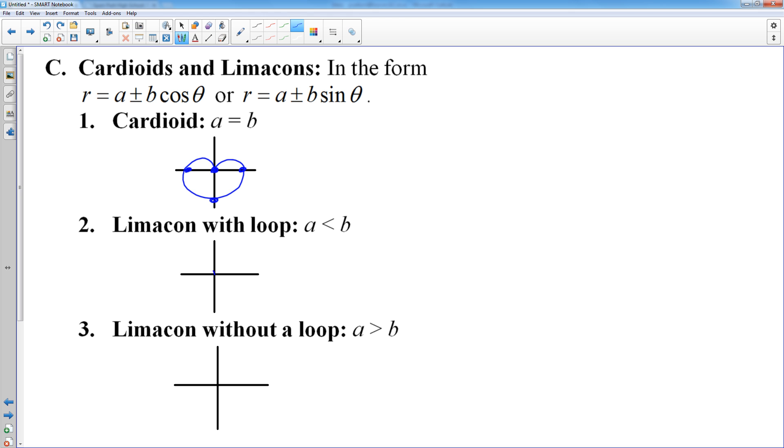A limaçon with a loop starts off looking like a cardioid. But then it comes through the origin and comes back in loops like this. And you have four points. You have one point that gives you the tip of the loop. A limaçon without a loop, sometimes they have dimples, sometimes they don't. But it's going to have four points in each of the four directions. And one of those four points is going to be a lot closer to the origin than the other three. So those are your three shapes.